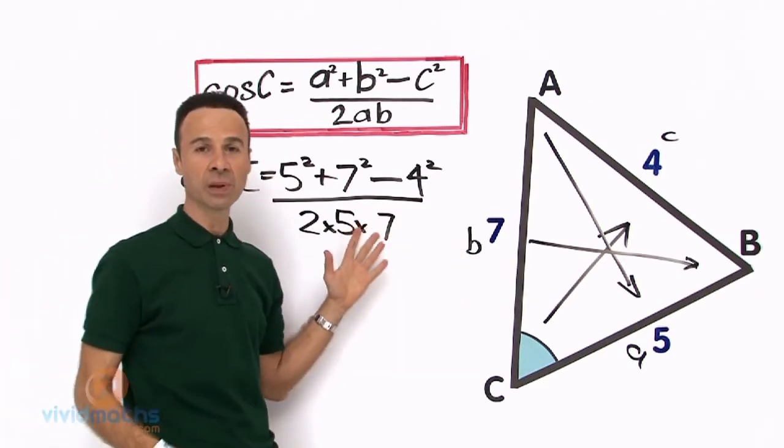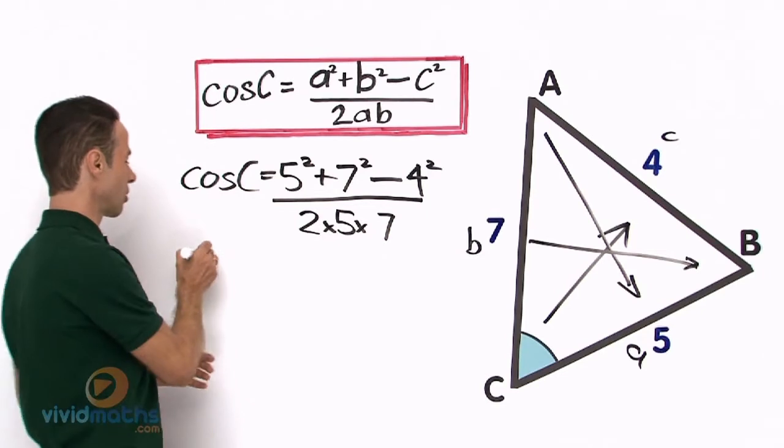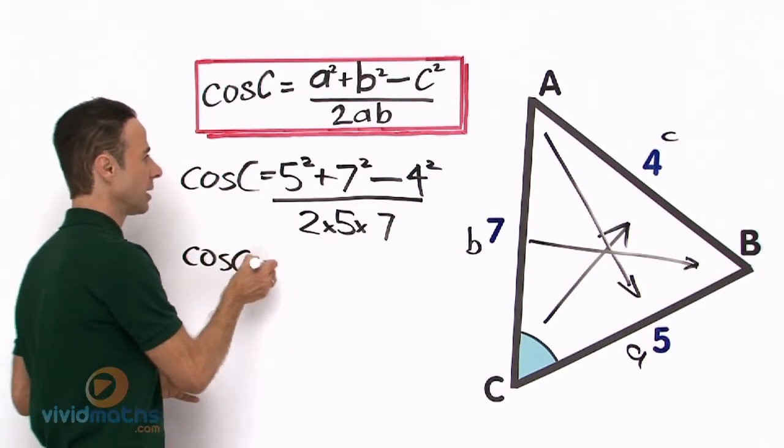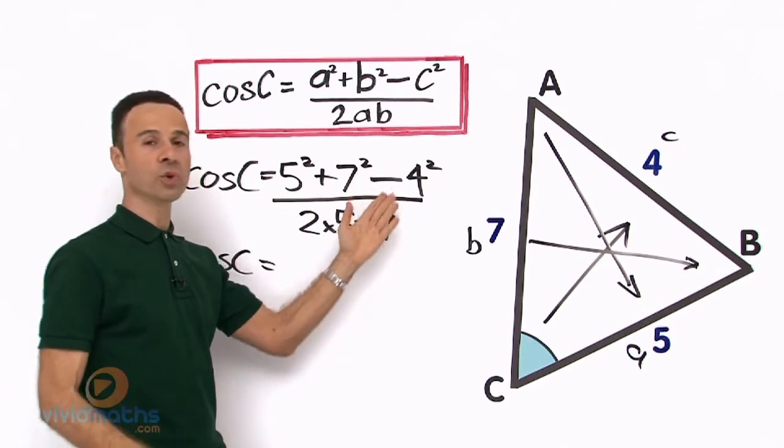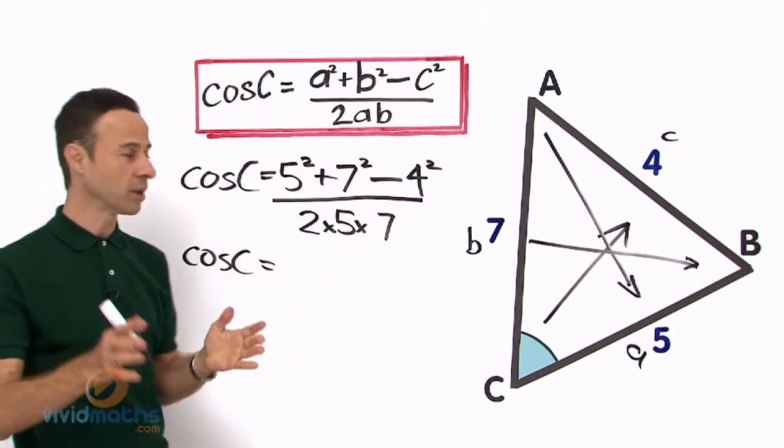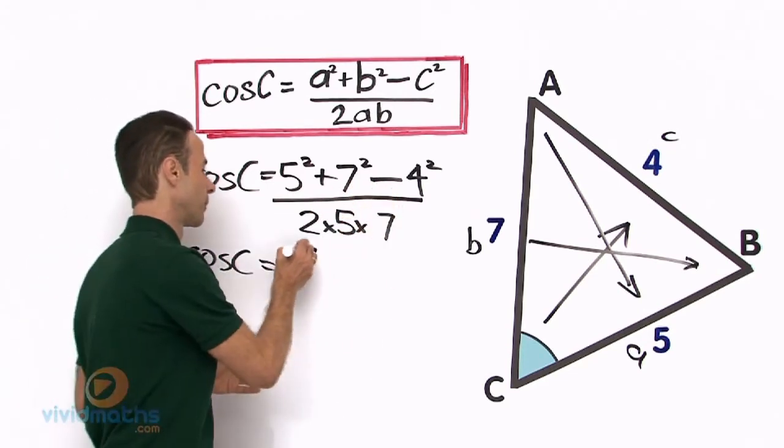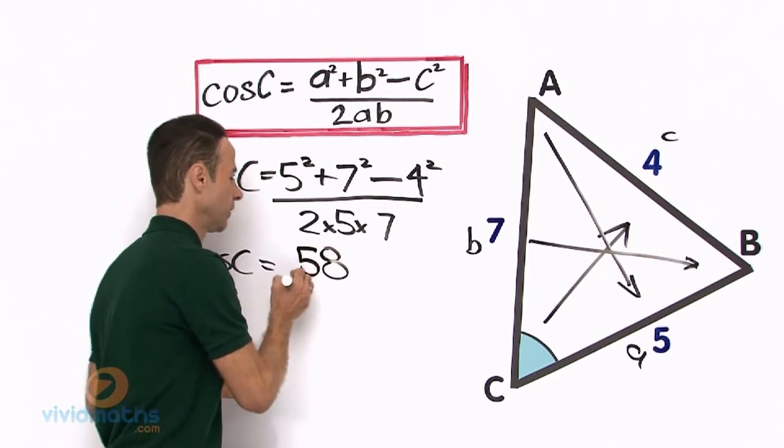Let us work it out. So cos C equals 5² + 7² - 4², all in the calculator that will give you a grand total of 58.